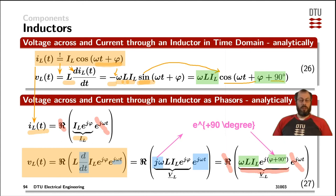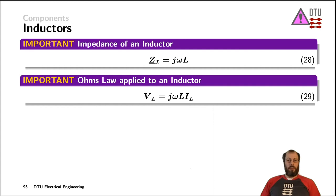That means the voltage across our inductor in the time domain has an amplitude of omega times the inductance times the inductor current, and exactly the same factor shows up for the amplitude in the phasor domain. Furthermore, the phase in the time domain is the original phase of the current phi, and then the voltage is offset by plus 90 degrees — also showing up in the phasor domain as the argument of the phasor. Note that the real part operation and e to the power of j·omega·t are not part of the phasor and therefore not included in the curly brackets. The impedance of an inductor can be simplified to Z with index L, which is equivalent to j times omega times L. Note that multiplication in the phasor domain with j·omega is equivalent to the time derivative in the time domain.